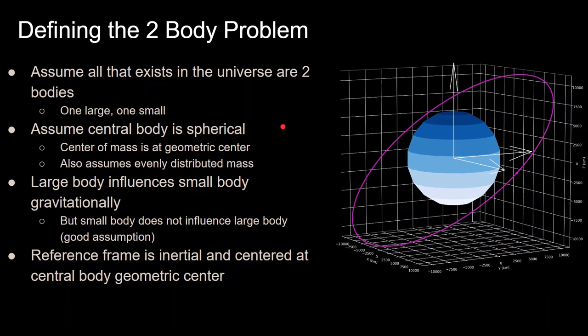So if the body is spherical and mass is evenly distributed, the center of mass will be at the geometric center, which is the center of the sphere. And its pull due to gravity can be modeled as a point source at that point. This means that we can assume that the force due to gravity from Earth is coming from the geometric center of the Earth. And we must also assume that the small body does not gravitationally influence the large body. And this is a good assumption, because the pull of something so small like a spacecraft is not going to influence the orbit of an object so massive like the Earth.